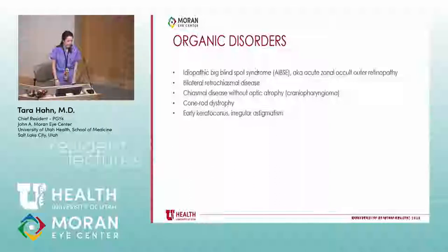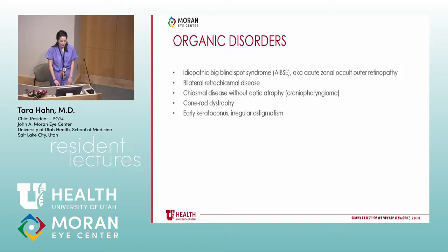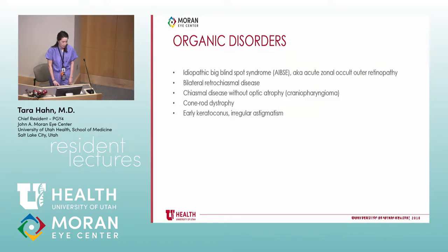Early keratoconus or any type of irregular astigmatism where they won't refract to 20/20 — if maybe you can get them to pinhole better but can't get the refraction better, think about getting a topography. If keratoconus has progressed enough, it could cause enough problems that they may not even have best-corrected visual acuity to 20/20.